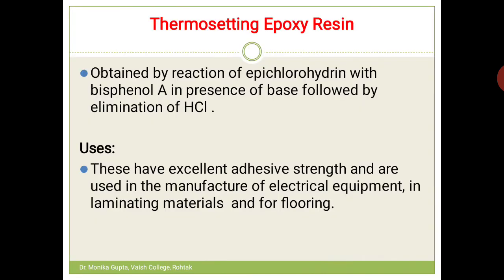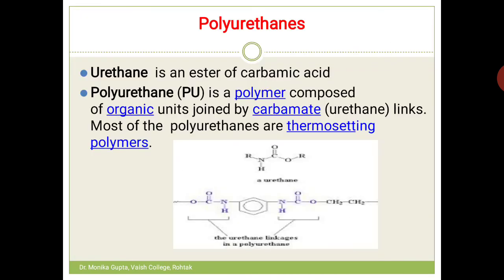Next are polyurethanes. As the name indicates, the monomer unit is urethane. Urethane is the ester of carbamic acid. Carbamic acid is R-NH-COO-H, which is very unstable and changes to amines and CO₂.